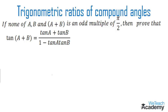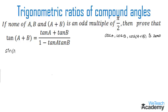We are given that none of a, b, and a+b is an odd multiple of pi by 2. So we can say that none of cos a, cos b, and cos(a+b) is zero. In order to prove this, let us consider the LHS, that is tan(a+b). So tan(a+b) can be written in the form of sin(a+b) divided by cos(a+b).